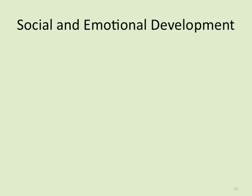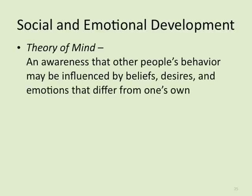As we continue to progress, we don't just develop cognitively — we develop socially and emotionally all at the same time, so there's a lot going on in a little kid's head that they don't even understand. Now we turn to social and emotional development. The theory of mind is the awareness that other people's behavior may be influenced by beliefs, desires, and emotions that differ from one's own. It may surprise you that it's typically not until around age eight or nine that children actually start understanding this.